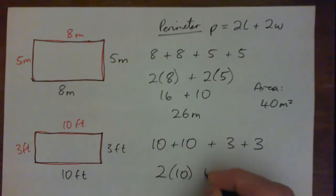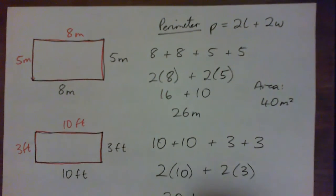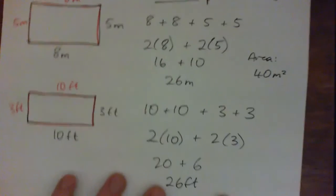Or 2 times 10, if you want to write it that way, plus 2 times 3. I've done it two different ways just to show you. So it ends up being 20 plus 6, which is 26 feet.